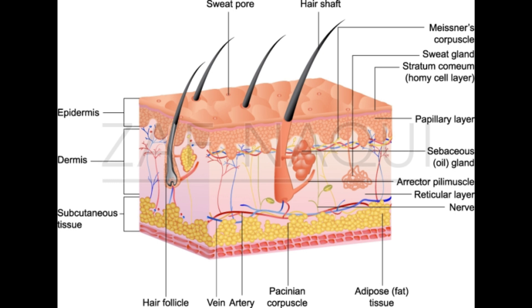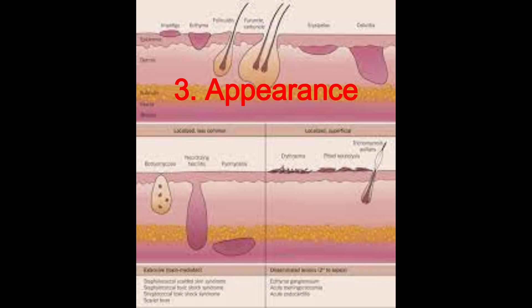Three, appearance. Cellulitis presents with diffuse, ill-defined borders with redness, swelling, and warmth. Erysipelas presents with well-defined, raised, bright red patches with a shiny surface.